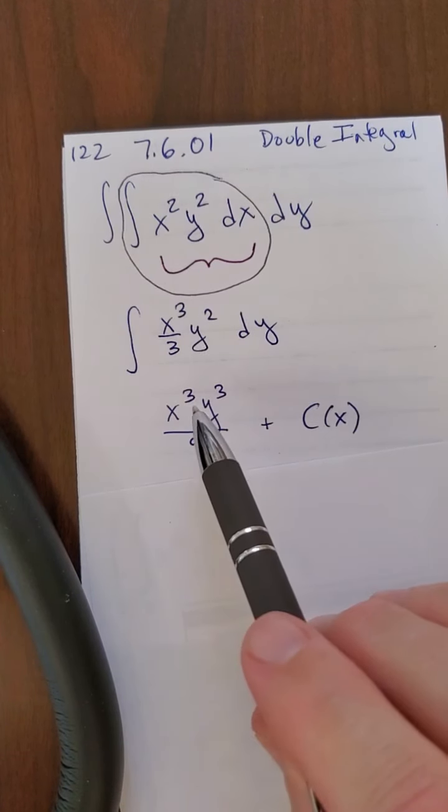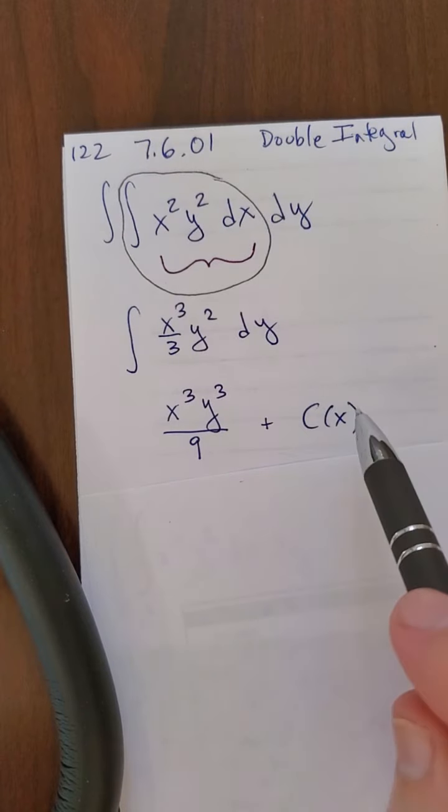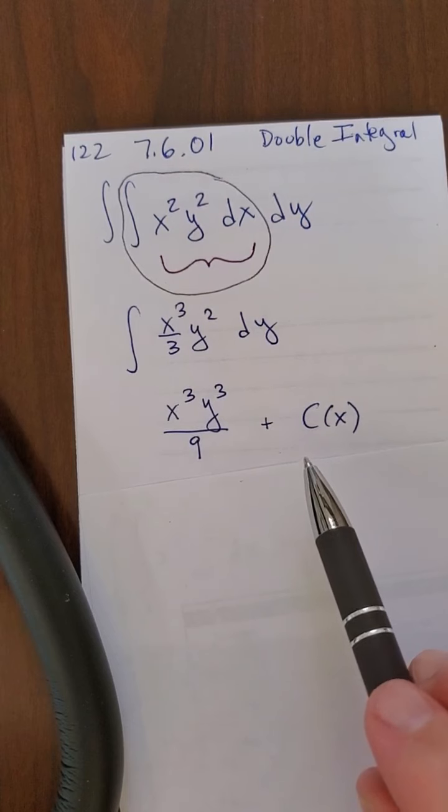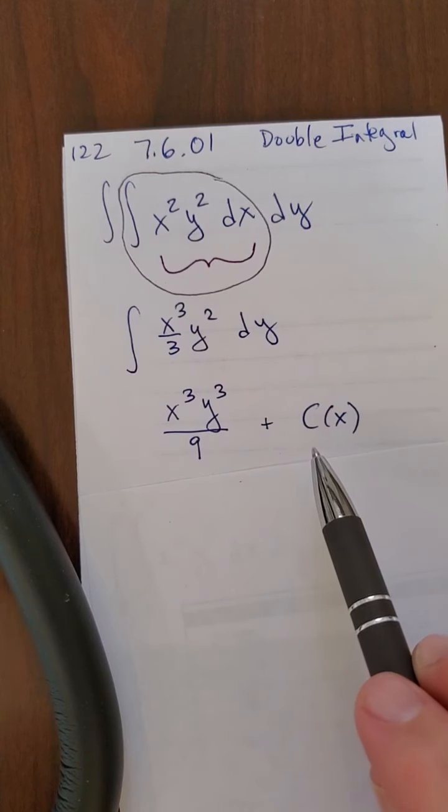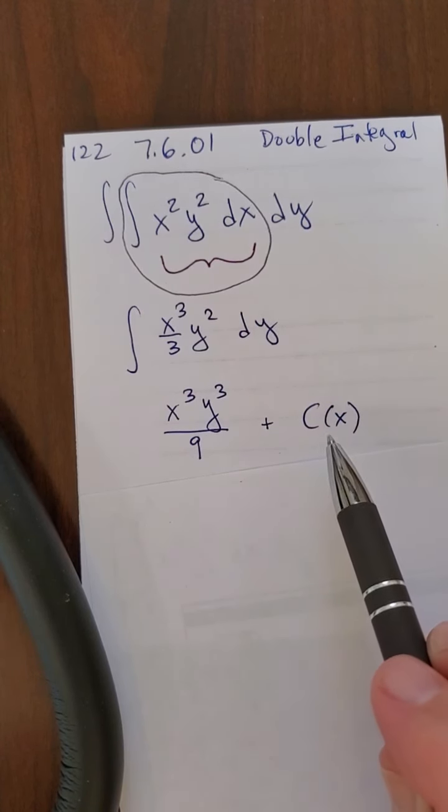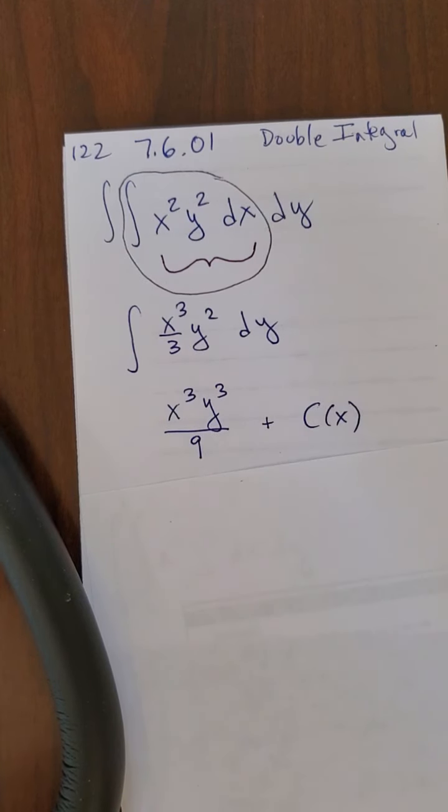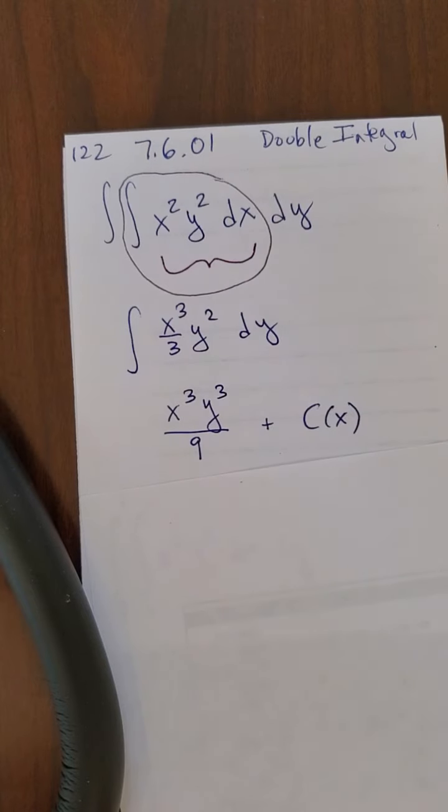Well, if I would take the derivative here with respect to y, that x to the 9th power would completely disappear, because it would be considered a constant. That's why it's not just a c, a regular constant, but any function of x will be treated like a constant, and that's why I wrote c of x, not just c. I'm spending a lot of time explaining it, but it's very important, it's very subtle.